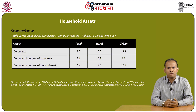Table 25 covers household possession of computer or laptop in 2011. Assets are categorized as computer/laptop with internet and computer/laptop without internet. Overall, about 20 percent of urban households and 5 percent of rural households possess the asset. The data reveals that 9 percent of households have computers or laptops (rural 5 percent, urban 19 percent), with 3 percent having internet (rural 1 percent, urban 8 percent) and 6 percent without internet (rural 4 percent, urban 10 percent).